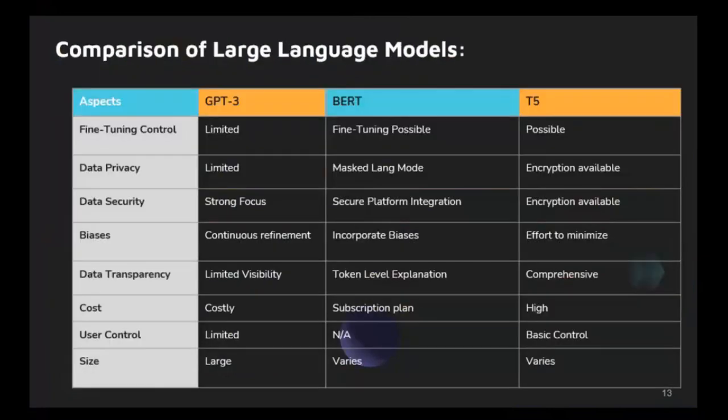Let's compare some of these big models like GPT-3, BERT, and T5. We are looking at fine-tuning control, data privacy, security, biasness, and some other aspects. Each of these models has its own strengths and weaknesses. In this table, the data privacy of different large language models is displayed in terms of fine-tuning, data encryption, and data transparency. We will be discussing each of them.